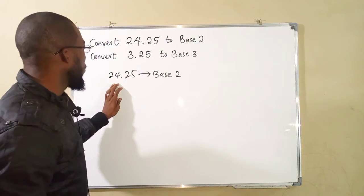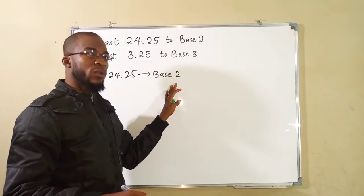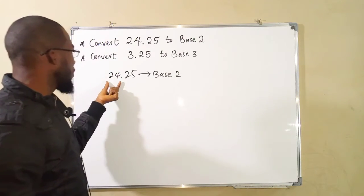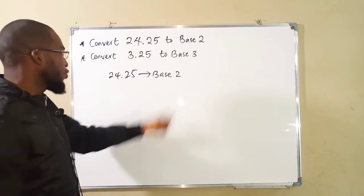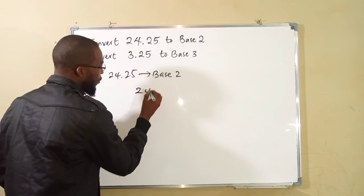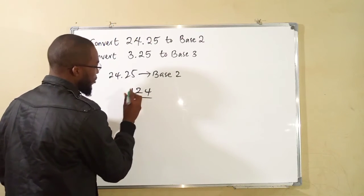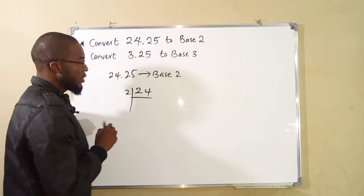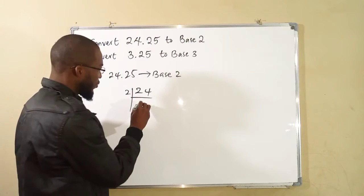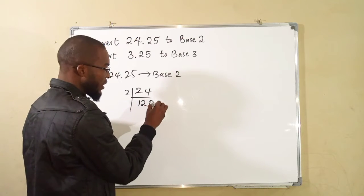To convert 24.25 to base 2, first of all, we are going to convert the whole number part to base 2. This is 24. We are going to form a successive division of this number using 2. 2 into 24 is 12 times without remainder.